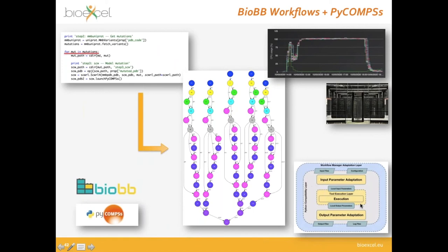From our building blocks diagram, recall the adaptation layer on top of the Python compatibility layer that makes our building blocks and workflows compatible with different workflow managers. For the HPC pre-exascale workflows we use PyCOMPs, a framework developed at the Barcelona Supercomputing Center. PyCOMPs automatically identifies loops — for example, for all mutations in a list, do a molecular dynamics setup — generates a dependency graph, identifies that the different mutations are completely independent, and runs these branches totally in parallel. This results in 100% CPU utilization across all nodes reserved for a job on the Marenostrum supercomputer.